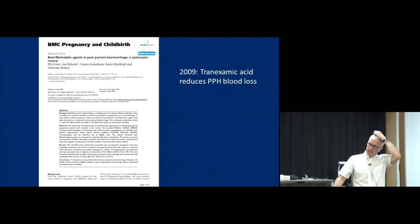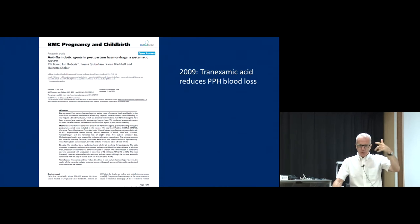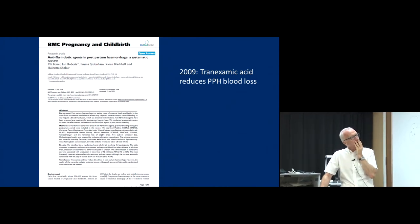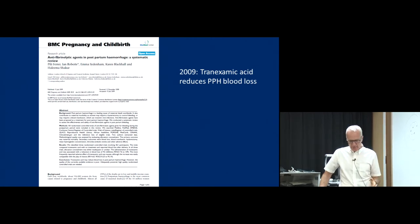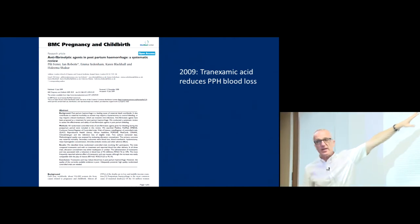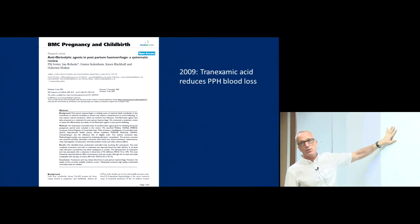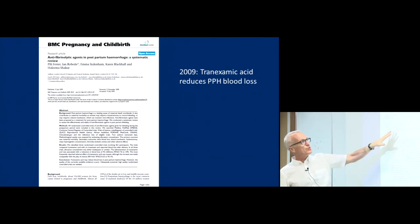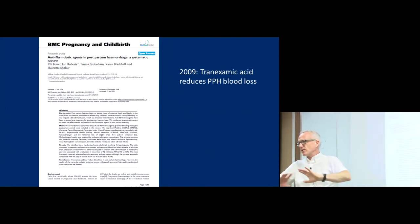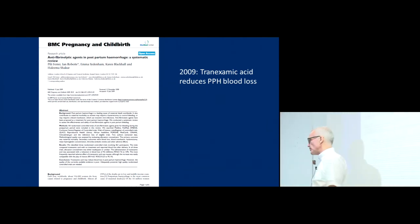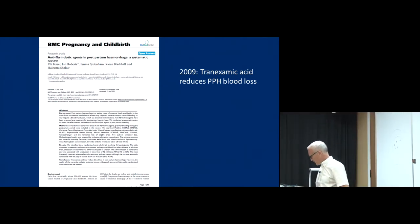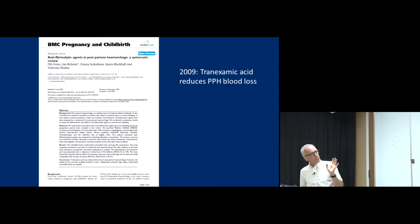I'm going to start from the beginning about the way you can use statistics to help check data integrity. In 2009, we wrote a systematic review of tranexamic acid in postpartum hemorrhage. We found all of these trials, we concluded, and we believed everything that was written in the paper — that tranexamic acid reduces blood loss. But since then we've become more skeptical.